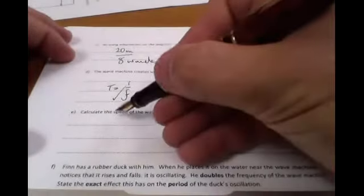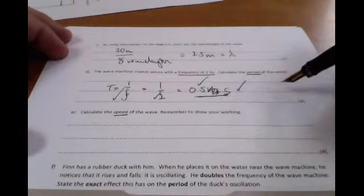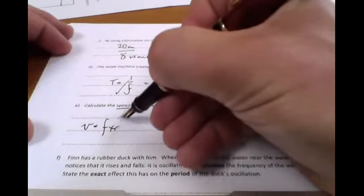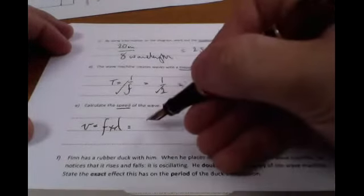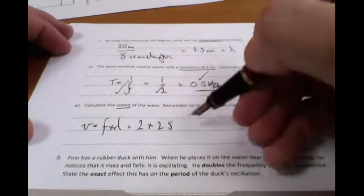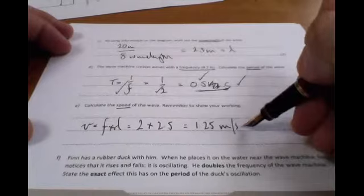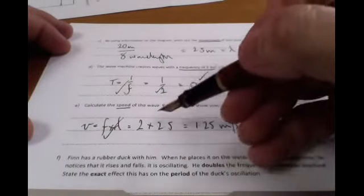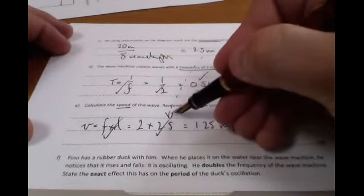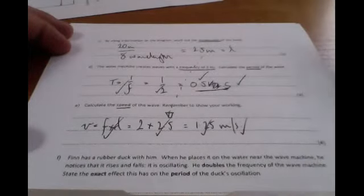Okay, the speed of the wave. So once again, the speed is the important part here. Look at all the information we've got. We've got the frequency and we've got the wavelength. So therefore, remember this equation: V is F times lambda. That gives us, taking the information we've got, which is 2 and 2.5, a grand total of 5 meters per second. Tick for equation, tick for substitution, and error carried forward will be used here. So if you got that bit wrong, that's okay to use.